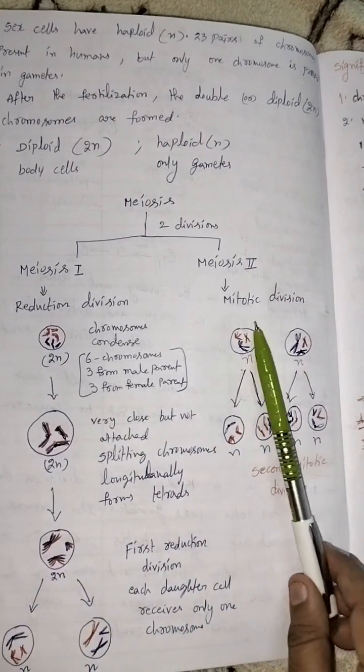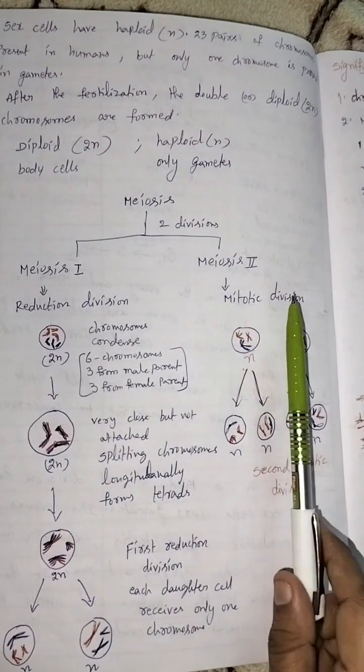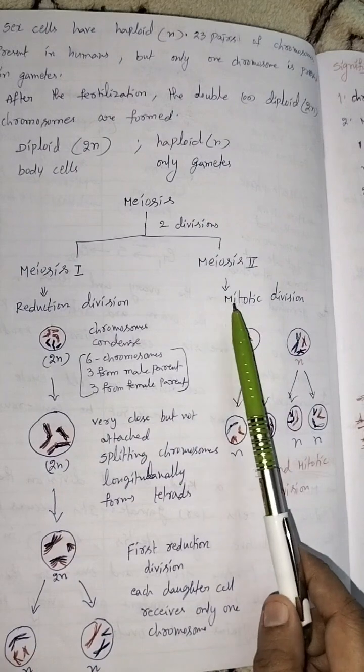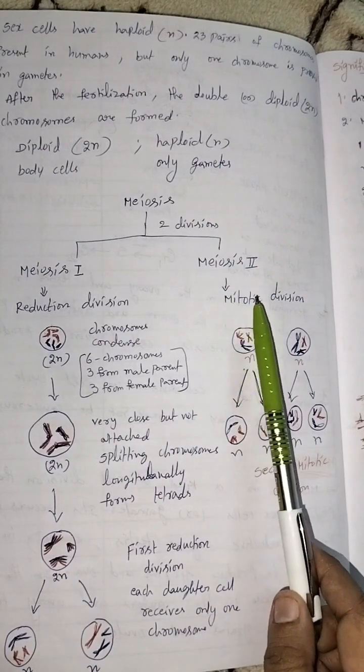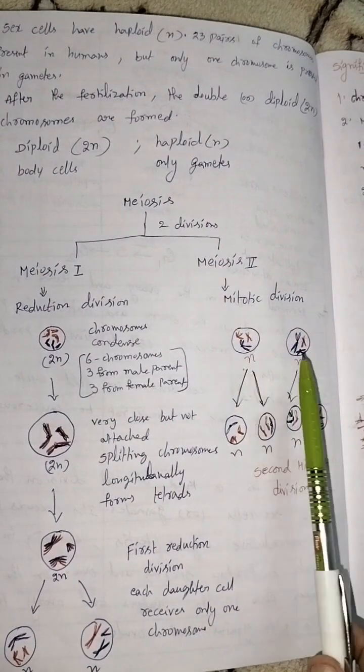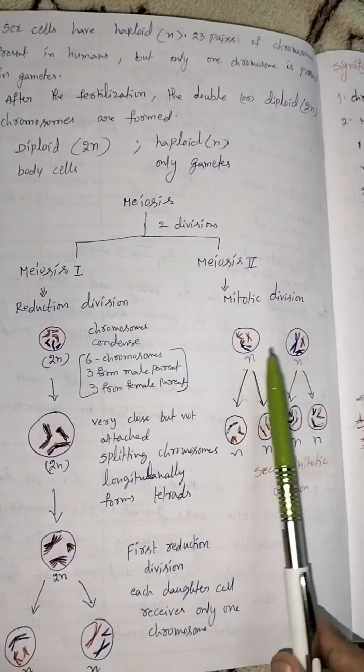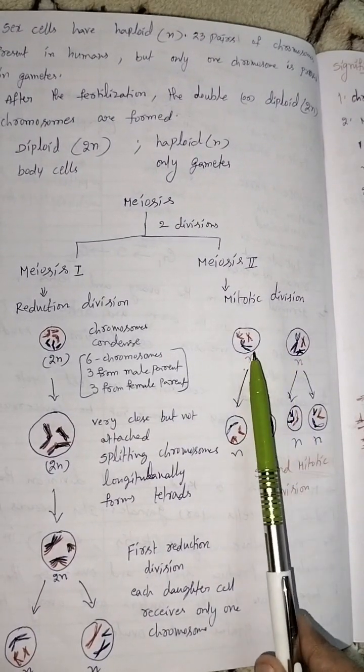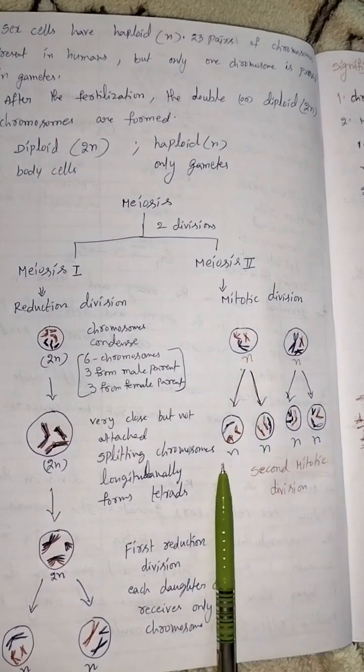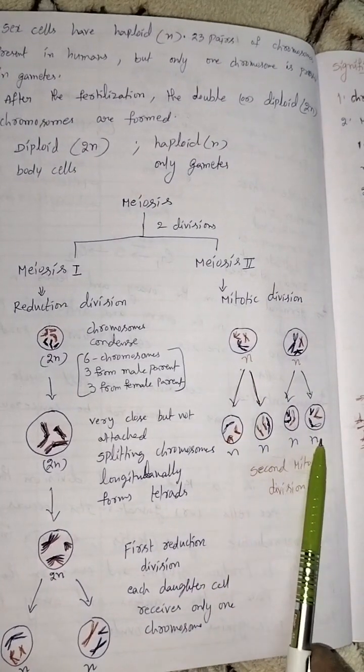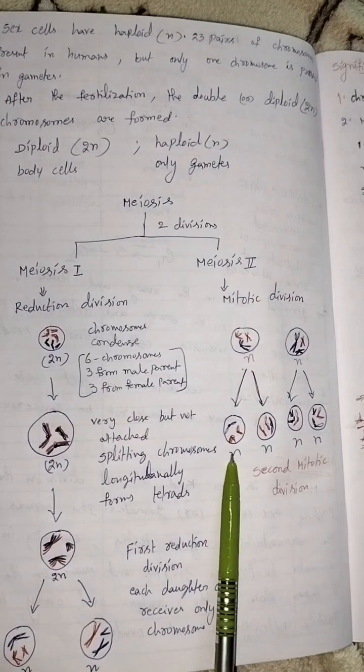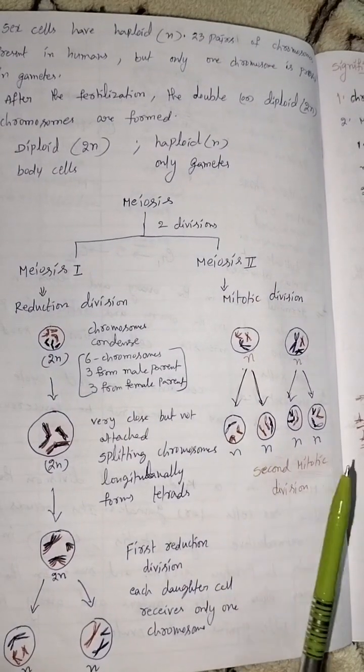These two daughter cells undergo meiosis 2 division. This division is same as mitotic division. The two daughter cells from meiosis 1 form four daughter cells. This is the second mitotic division.